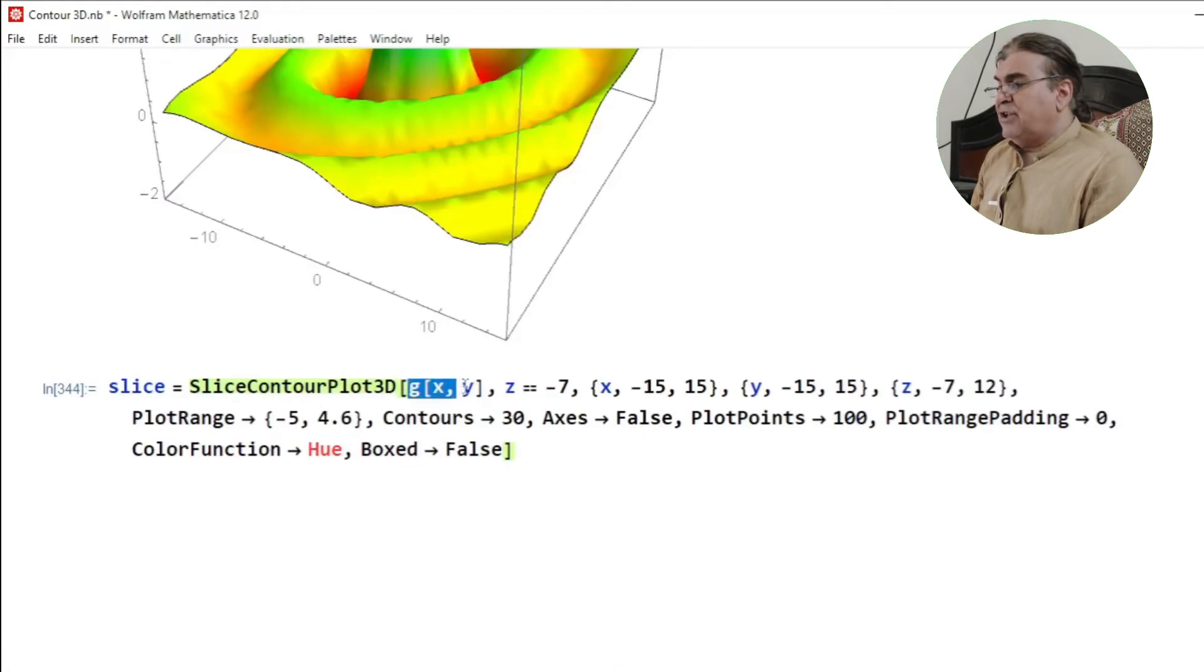And now I want to plot the function g of x and y through the command SliceContourPlot3D in order to generate the projection in the xy plane. And I ask Mathematica to put the projection of the function as a contour plot on the position along z axis with minus 7.